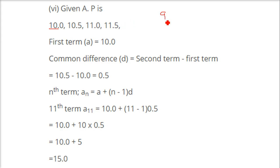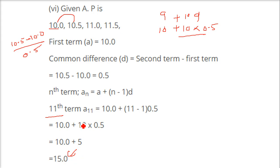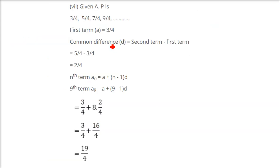Here we have A as 10. We need to find the 11th term, so it is A plus 10D, since 11 minus 1 is 10. D is 10.5 minus 10.0, which is 0.5. Using this value, when you solve it you get 15 as the 11th term.